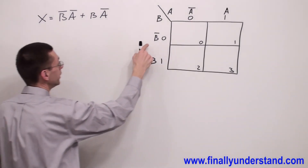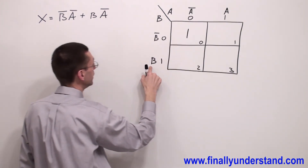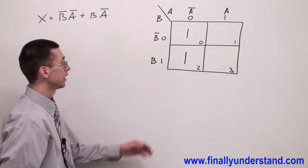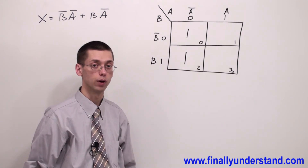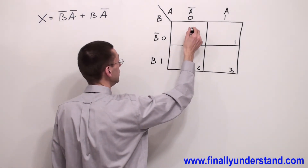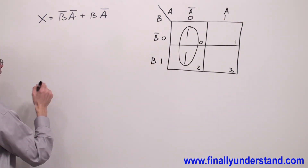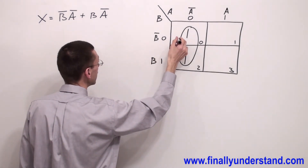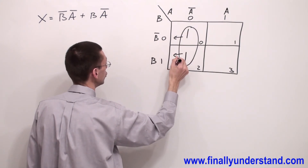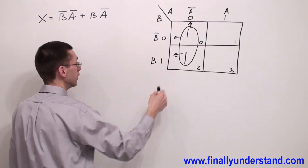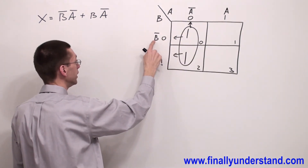I have B-not A-not. I'm supposed to write one in this cell. I also have BA-not, so I write one in that cell as well. I have two highs. Remember, in a two-variable K-map we can group ones in groups of one, two, and four. We can group these two ones because they are placed vertically. To approach this problem, I need to realize that this group is placed in one column and two rows, meaning I have to look at the side of these two rows and at the top of this column.